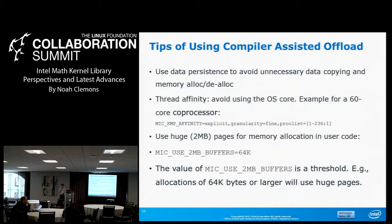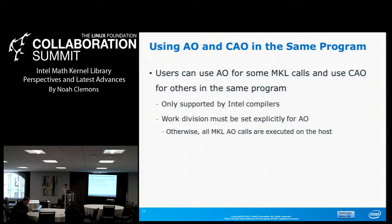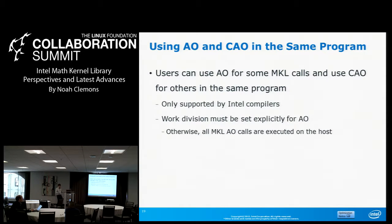Tips: use data persistence to avoid unnecessary data copying, avoid using the operating system core, and it's always useful to use huge pages. The MIC 2-megabyte buffers value is more of a threshold — allocations of 64 KB or larger will use those huge pages. If you want to use automatic offload and compiler-assisted offload in the same program, the only extra step is to set the work division explicitly for automatic offload; otherwise all automatic offload calls will execute on the host.